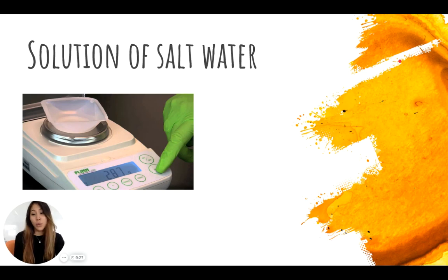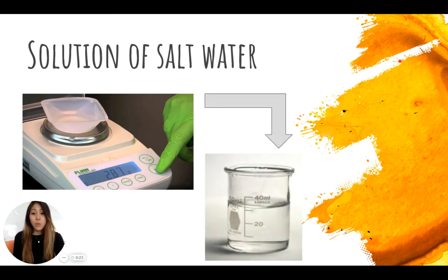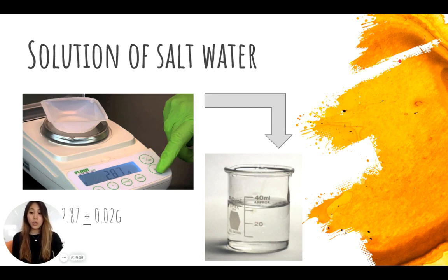Say we are going to weigh 2.87 grams of salt, NaCl, and we're going to place that salt into 32 milliliters of distilled water that was measured in a beaker. In this case, 2.87 would have an uncertainty, an absolute uncertainty of 0.02 grams, and the 32 milliliters of distilled water will have an absolute uncertainty of 2 milliliters.